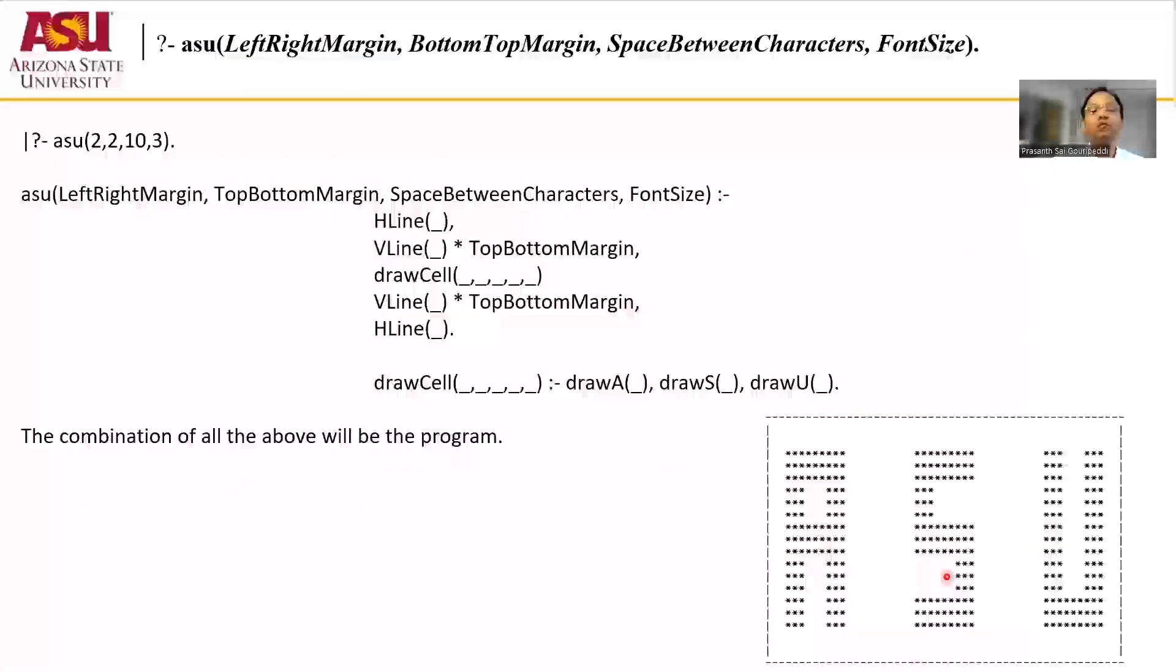Now putting parts of what you've learned in part one and part two, you should be able to output this ASU. So it's simple: you draw one horizontal line, followed by a vertical line times top bottom margin, then you start drawing your cells. What does it do? It draws A, draws some spaces, draws S, draws some spaces, and draws U followed by some spaces.